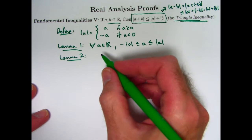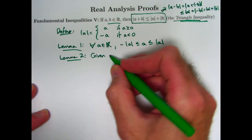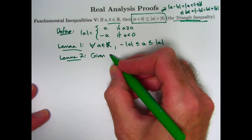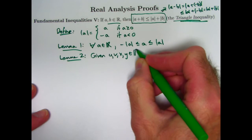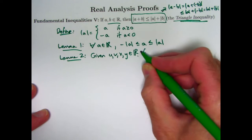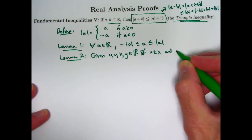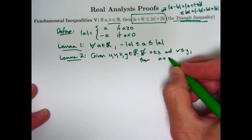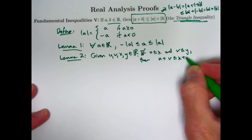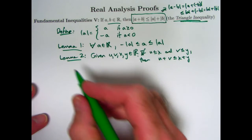Lemma two: given any four real numbers u, v, x, and y, if you assume that u is less than or equal to x and v is less than or equal to y, then u plus v is less than or equal to x plus y. That should make good sense. At the end of the video I will briefly talk about the proof of this.